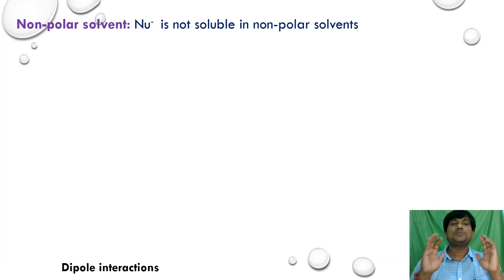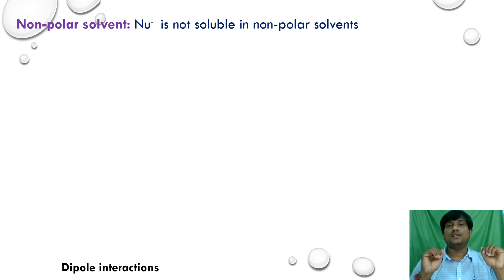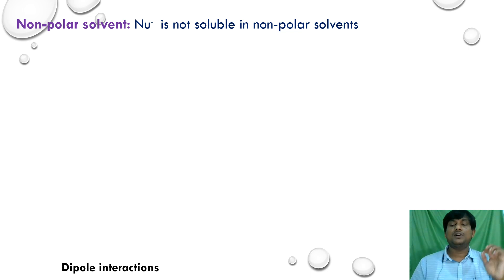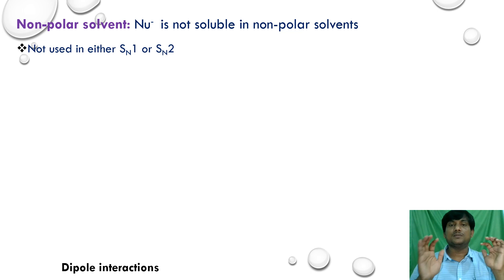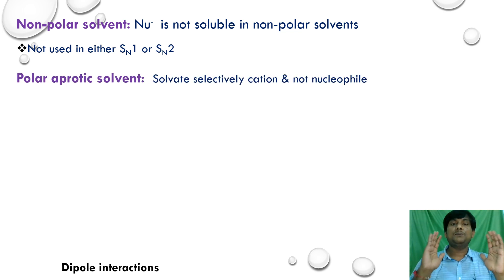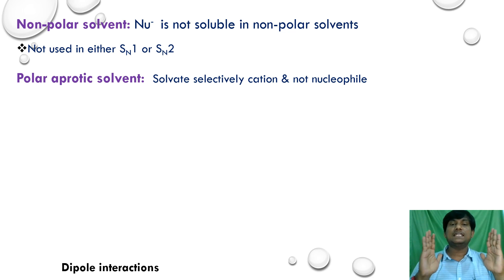If you take a non-polar solvent, nucleophiles are not soluble in non-polar solvents. That is why non-polar solvents are not suitable for SN1 or SN2 reactions. If you take a polar aprotic solvent, it solvates cations selectively but not anions or nucleophiles.